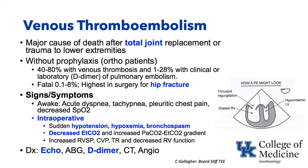Echo diagnosis would show a dilated right ventricle, an empty left ventricle, and increased tricuspid regurgitation. Other ways to make the diagnosis include arterial blood gas showing hypoxemia, D-dimer showing evidence of fibrinolysis, and CT angiography.